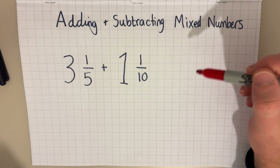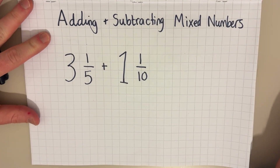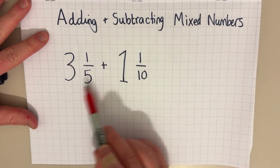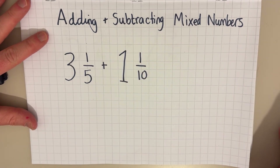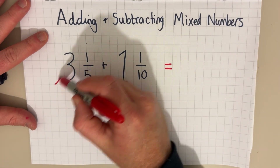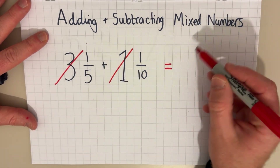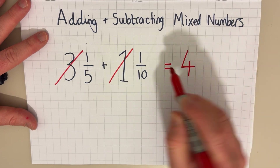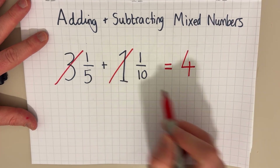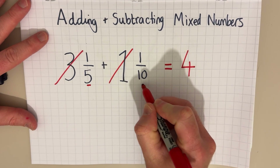This is a relatively easy first question. When we're adding two mixed numbers like this, the first thing to do is just to add the whole numbers. So three and one gives me four. Now I've got four wholes and I just have to deal with the fractions.